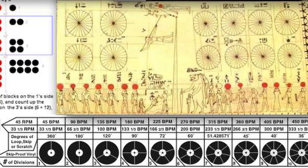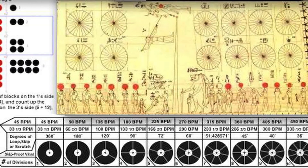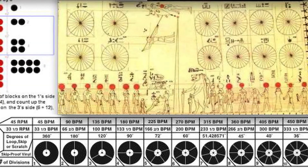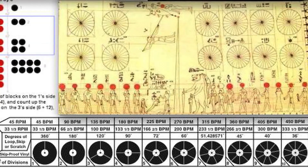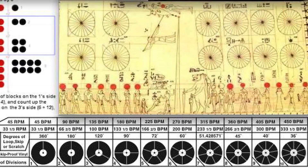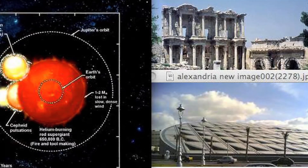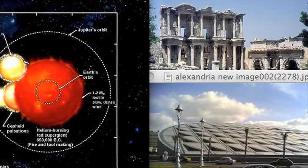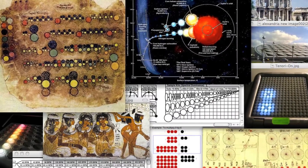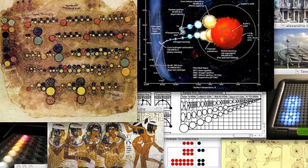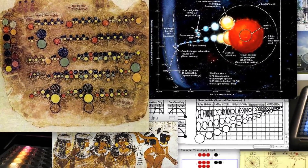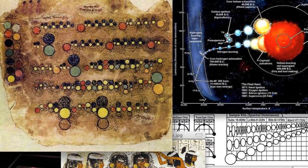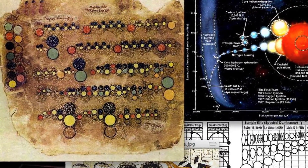Notice how the TTM BPM skip-proof record charts in the bottom left corner depict the same types of geometric divisions as the Egyptian illustrations in the lower right corner. The images of buildings in the upper right corner of this screenshot are ancient and modern libraries of Alexandria. I encourage all of you to check your local libraries and museums for books and artifacts that can further illuminate non-Western systems that are currently not being taught by music schools.